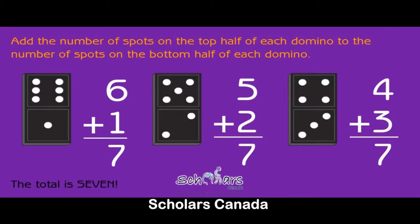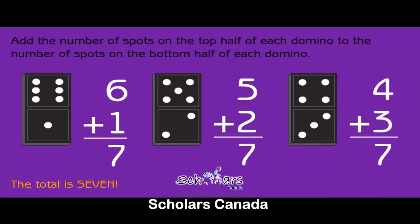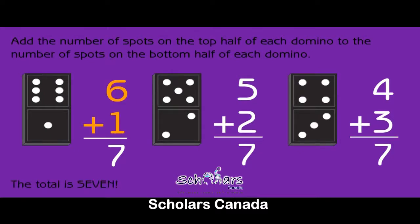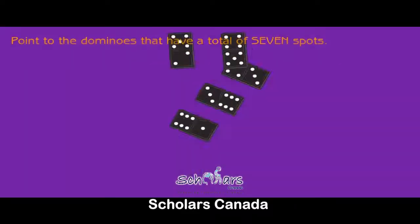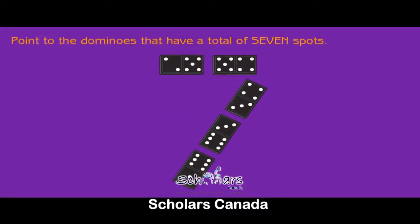Add the number of spots on the top half of each domino to the number of spots on the bottom half. The total is seven. Six plus one equals seven. Five plus two equals seven. Four plus three equals seven. Point to the dominoes that have a total of seven spots.